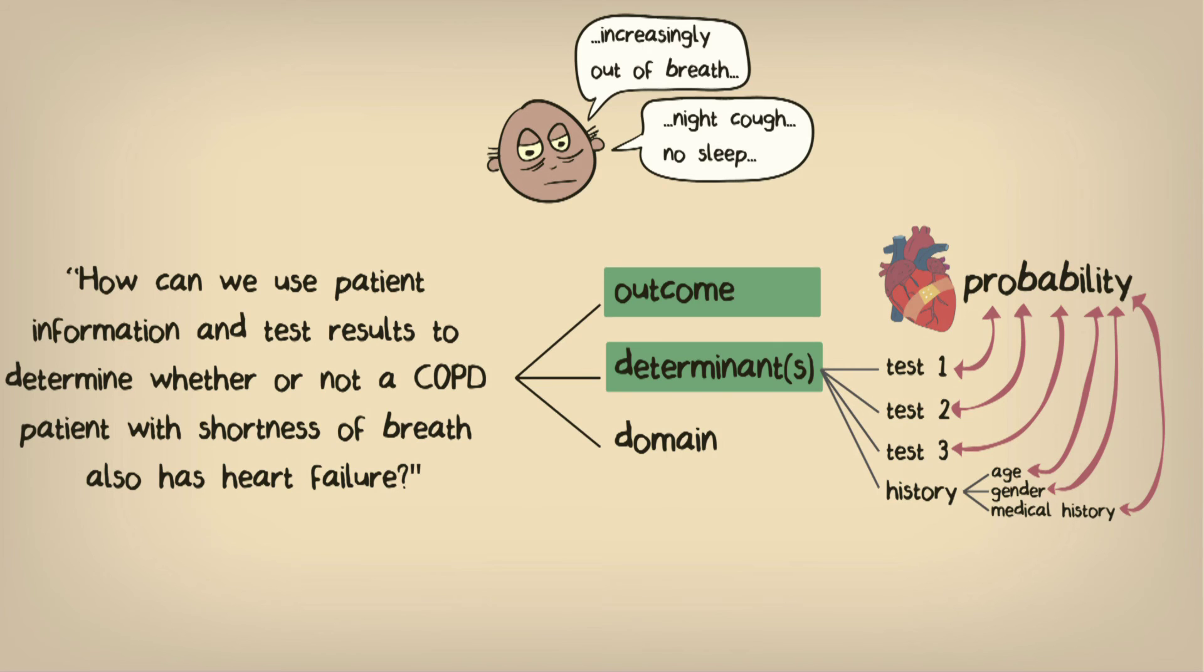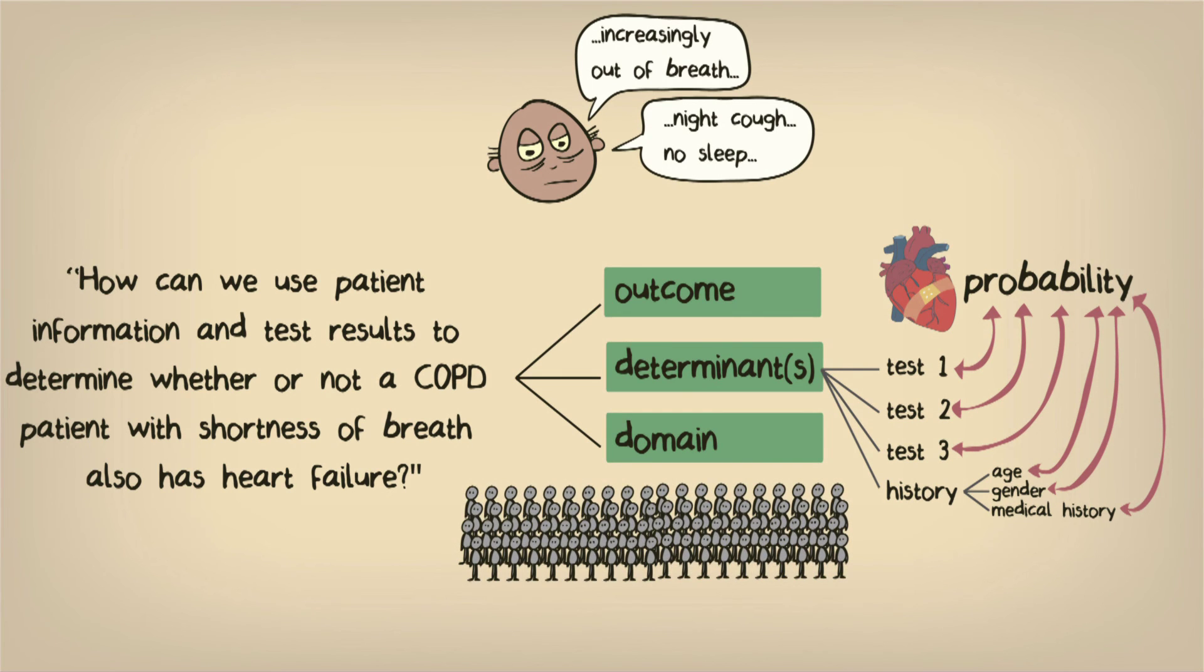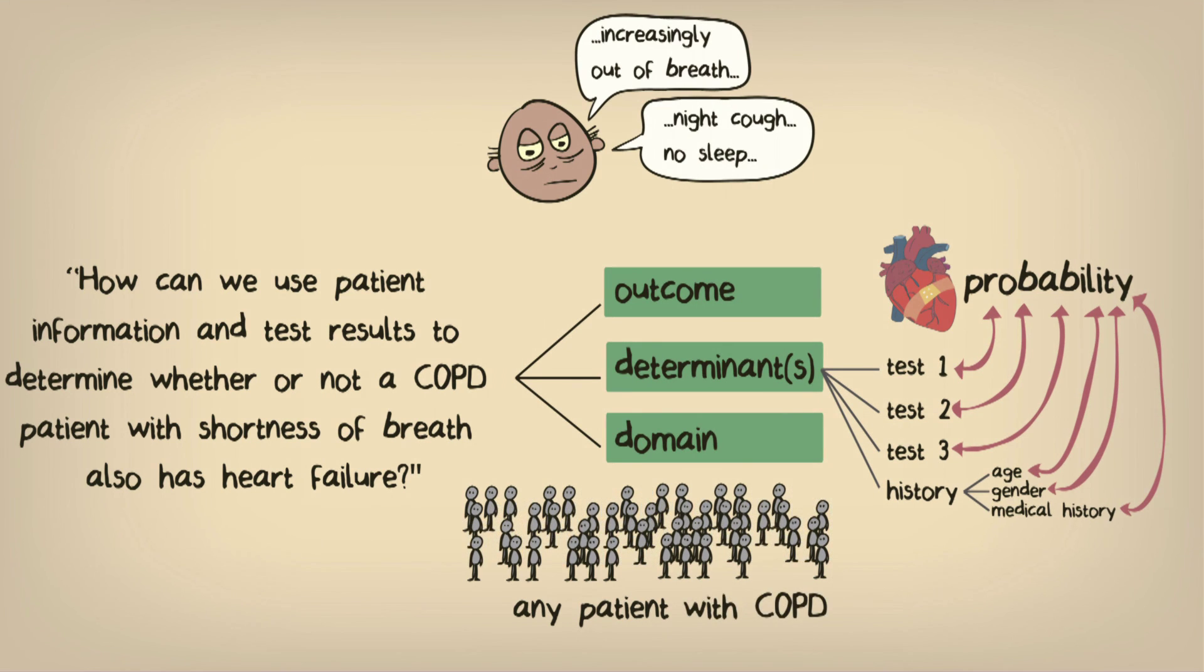And finally, after the outcome and the determinants, we have the research domain. That is the group of people to whom we may want to apply our research findings. Careful consideration of the domain is vitally important, as we need to make sure that our study collects information that's relevant to future patients. Do our research findings need to be applicable to any future patient who enters the clinic? Not quite. Remember our initial patient, the 70-year-old man who came into the clinic. He was suspected of having heart failure, but we needed clearer guidance to determine whether or not his symptoms were instead signs of worsening COPD. Our clinical problem isn't relevant to just anyone, so instead we must focus on people with an established diagnosis of COPD that present with symptoms suggestive of heart failure. This is the domain of our study.